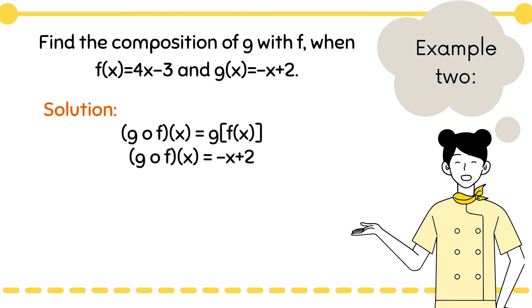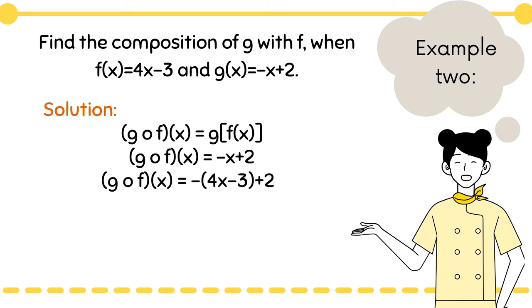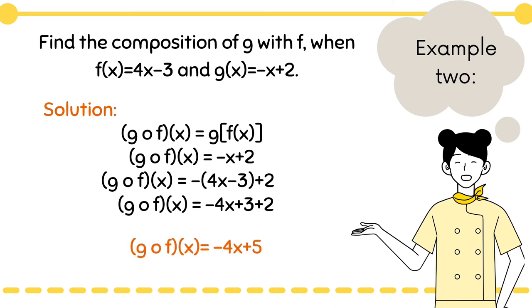Write down our dependent function which is −x + 2. Substitute x with the independent function, so it becomes −1 times (4x − 3) + 2. Distribute the negative sign so it becomes −4x + 3 + 2. Simplify and we have the composition of g with f equal to −4x + 5.